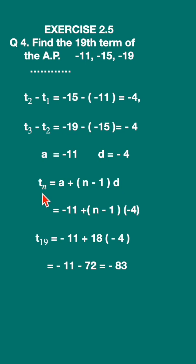The general formula tn, that is the nth term, is a plus n minus 1 times d.